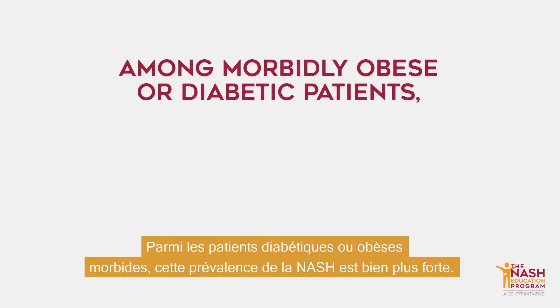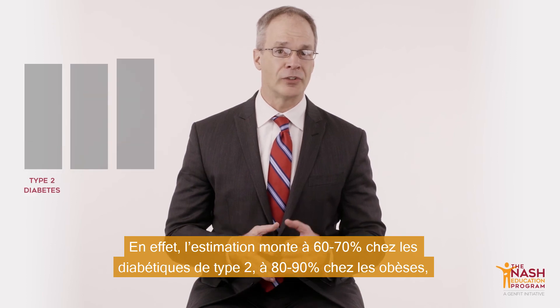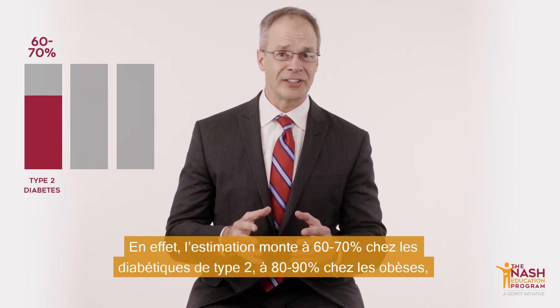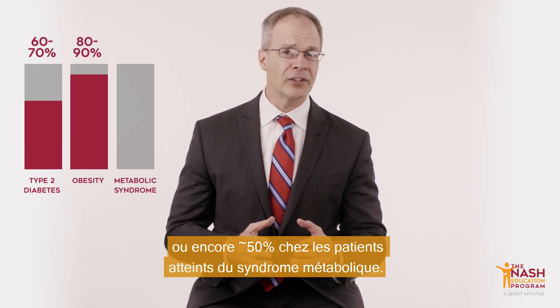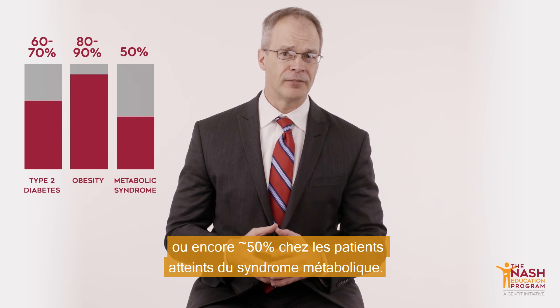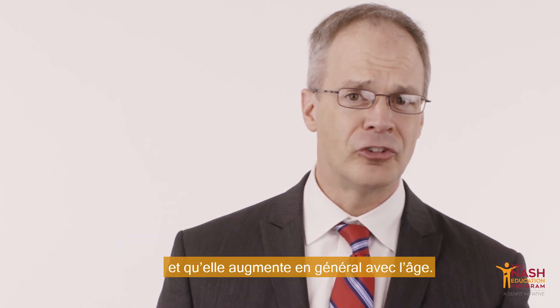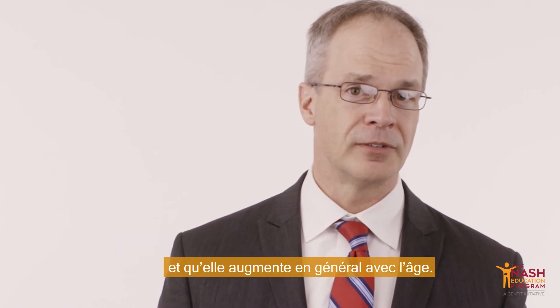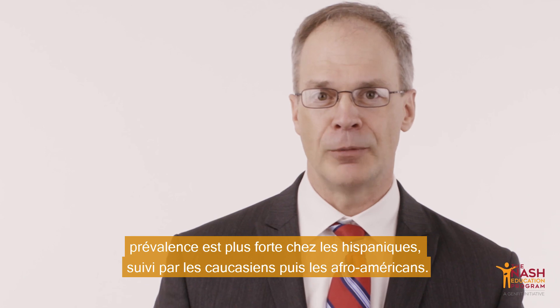Among the morbidly obese or diabetic patient, prevalence rates for NAFLD are thought to be much higher. Indeed, this number rises significantly in those with type 2 diabetes at 60 to 70 percent, obesity at 80 to 90 percent, or metabolic syndrome at about 50 percent. A number of studies have also found that the prevalence of NAFLD is higher in males than females and that it generally increases with age. Studies in the U.S. consistently show the prevalence to be higher in Hispanics, followed by Caucasians and African Americans.